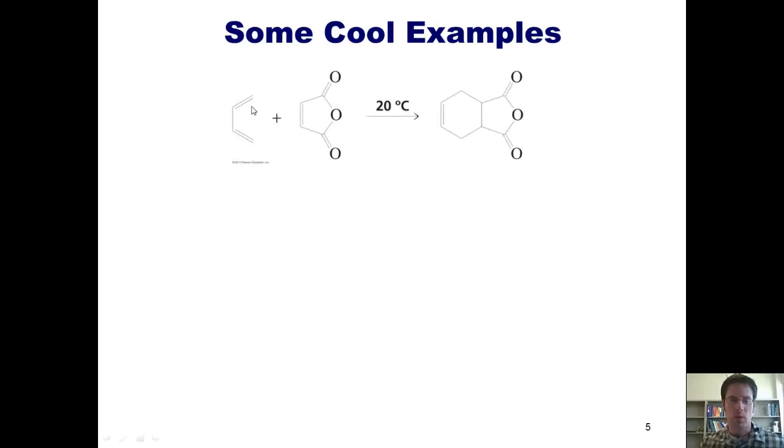If, for example, I reacted my 1,3-butadiene with this compound called maleic anhydride, I would get this polycyclic product. This is a reaction that my organic chemistry students actually do in their organic chemistry lab.